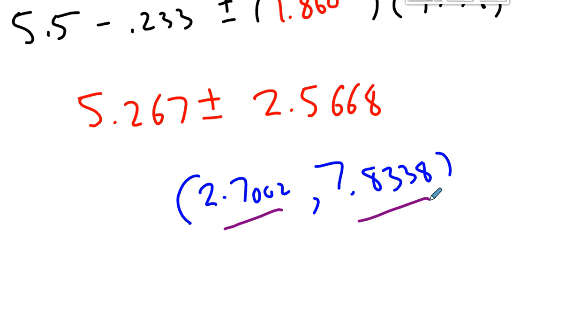Something to notice, notice that zero is not in this interval. Zero is not in this interval. So that means it's unlikely that the percent difference for these two groups, the red wine drinkers versus the white wine drinkers, is zero. So if the difference is unlikely to be zero, it means that really there is a difference in the percent change in polyphenol levels. And it looks like it's favoring the red wine drinkers.